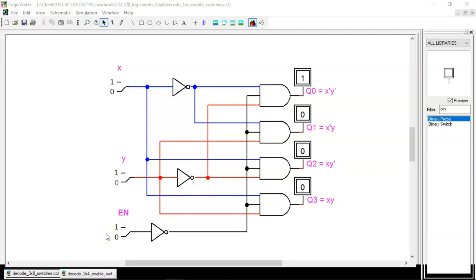EN is short for enable. When EN equals 1, this NOT gate creates a 0 that is passed on to all of the AND gates. If one input to an AND gate is 0, then the output is guaranteed to be 0. So, with EN equal to 1, all of the outputs are 0, regardless of what the x and y inputs are. This is the case where the circuit is disabled, so all of the outputs are inactive.